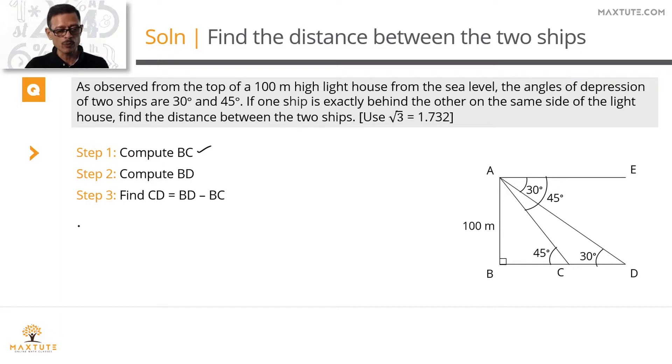To find the length of BC, step one, we are going to look at right triangle ABC. In right triangle ABC, angle C measures 45 degrees. AB is the opposite side to this angle, and BC is the adjacent side. Which trigonometric ratio combines opposite side and adjacent side? That is tan theta.